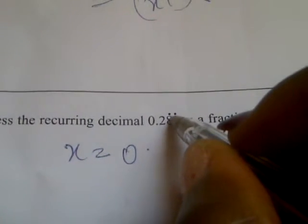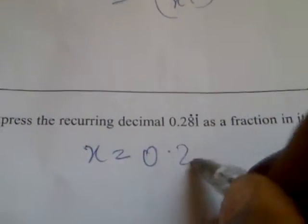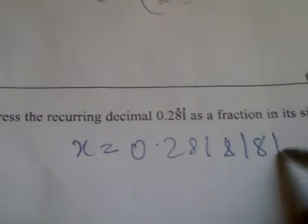Now because the recurring dot is on top of the one, so the one will be recurring. So 281, 81, 81, dot dot dot.